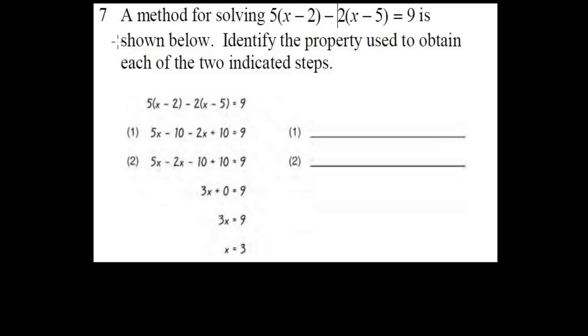Here we have the seventh question in integrated algebra and it's related to identifying the property. The question is: a method for solving 5(x-2) - 2(x-5) = 9 is shown below, and identify the property used to obtain each of the two indicated steps.